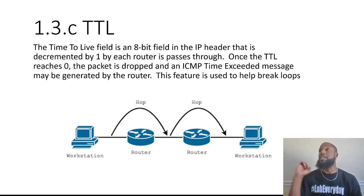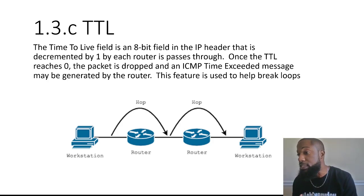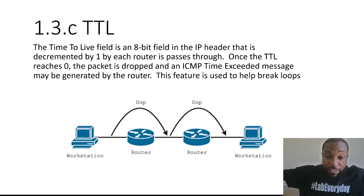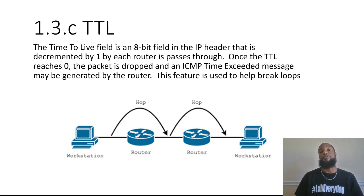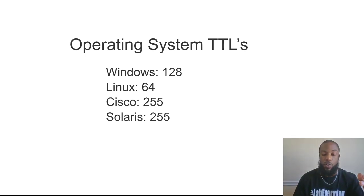This feature is used to help break loops. If we didn't have Time to Live and you sent a packet out into the network that's not destined for a specific network and it happens to loop, it would basically loop all day. The same issue that Spanning Tree is designed to resolve — a broadcast storm — we'd have that on the internet on a grander scale, and that would be a catastrophe. That's why they created Time to Live.